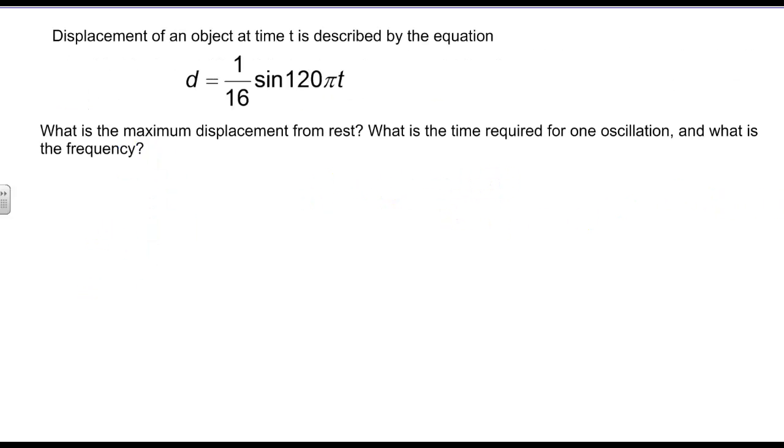Moving on to another equation, in this case, they give us the actual equation of the harmonic motion, and we're asked to describe what's the maximum displacement from rest, that's just the amplitude, so max displacement is equal to 1/16 units, since we aren't talking feet in this case. And what's the time required for one oscillation? So what they're basically asking for is the frequency, or I'm sorry, the period.